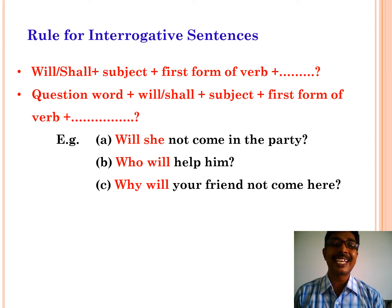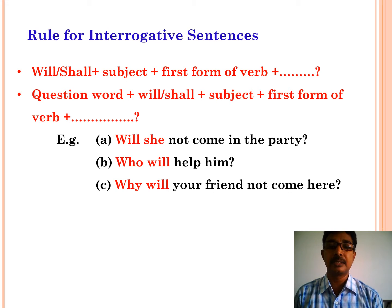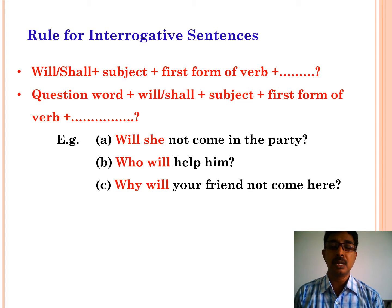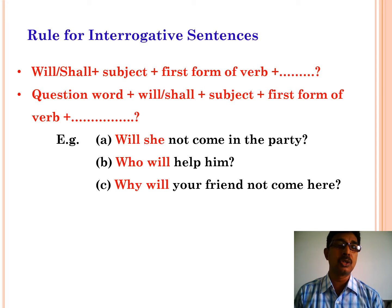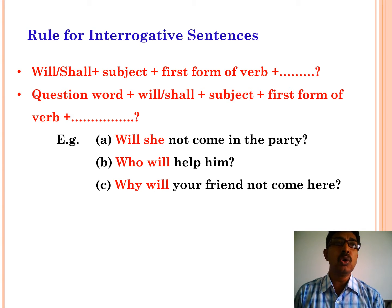Now let us see the rules for interrogative sentences in simple future. The structure is: will or shall — plus subject — plus first form of the verb — plus object — plus question mark. Remember, children, the question mark is also part of the answer, so we should not forget to use it in interrogative sentences. Examples: Will she not come to the party? Who will help him? Why will your friend not come to it?